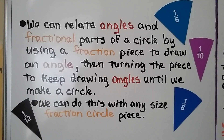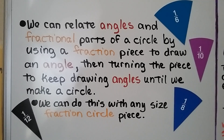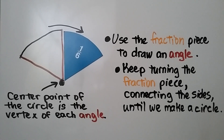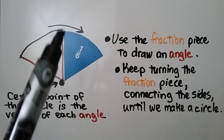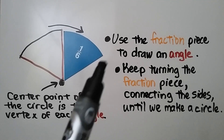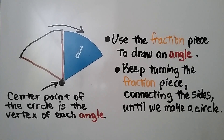We can relate angles and fractional parts of a circle by using a fraction piece to draw an angle, then turning the piece to keep drawing angles until we make a circle. We can do this with any size fraction circle piece. We use the fraction piece to draw an angle and keep turning it, connecting the sides, until we make a circle.